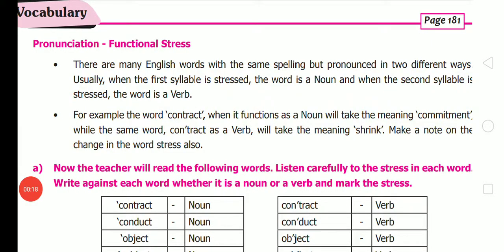Turn to page 181 where you can deal with vocabulary pronunciation and functional stress. When you are pronouncing some words, we give stress to certain syllables. There are many English words with the same spelling but pronounced in two different ways. Usually when the first syllable is stressed, the word is a noun, and when the second syllable is stressed, the word is a verb.